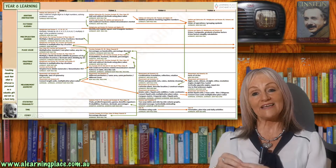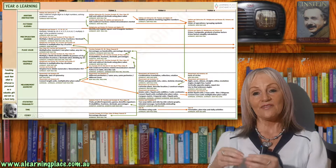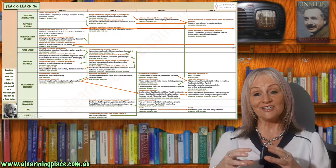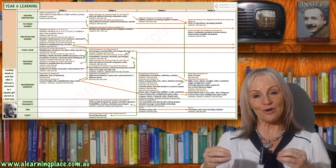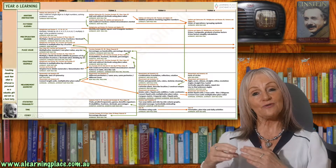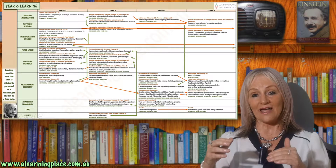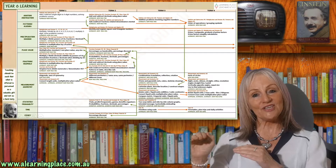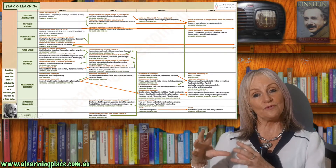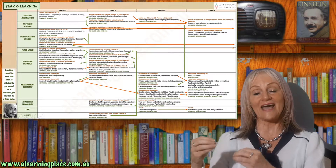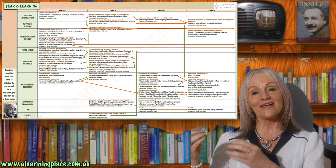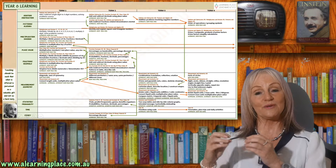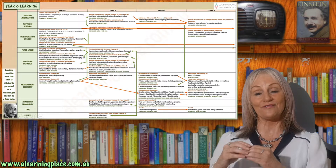In term two of year six, children will begin to add and subtract fractions with related denominators. They will be able to change the related denominators into the same denominator by multiplying or dividing the numerator and the denominator by the same number. They'll be putting in the vinculum when they multiply, which will allow them to demonstrate that they understand they're multiplying or dividing by one, which means they're not changing the size of the fraction.